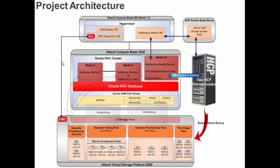A command device is mapped to the hypervisor HDID repository VM to access VSP G600 storage. Inside Hitachi Compute Blade 2500, Blade 6 and Blade 9 are installed and configured with Oracle 12c ASM Real Application Cluster. The Oracle 12c RAC ASM database is present in the Hitachi VSP G600 storage, with Oracle ASM disk groups created. Blade 10 is used as a NetBackup master server, which is also a snapshot mount host and an Oracle server.